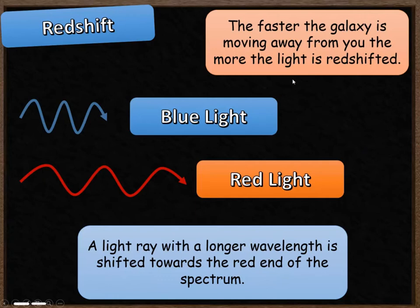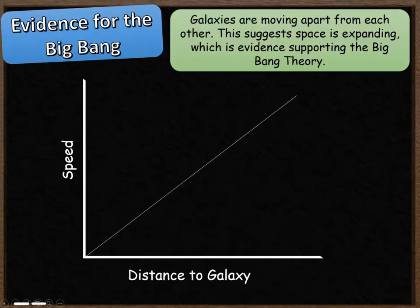The faster the galaxy is moving away from us, the further away it is, the more the light is going to be red shifted. So this is evidence for the Big Bang. When we look into the sky, galaxies are moving apart from each other — that suggests space is expanding, which is evidence that supports the Big Bang theory.